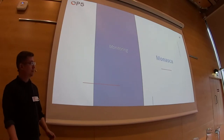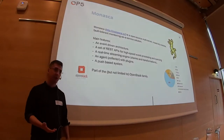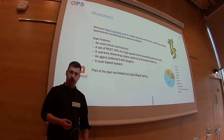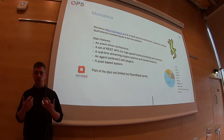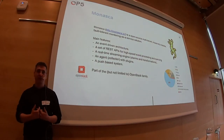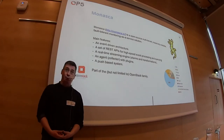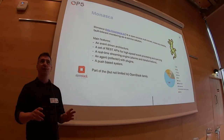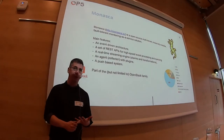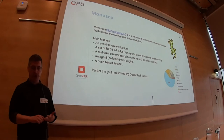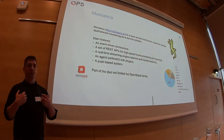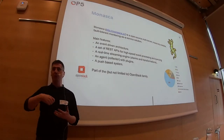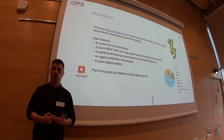This is where Monasca comes in. Monasca is originally built as part of one of the components in the OpenStack project. The definition is that it's an open source, multi-tenant, massively scalable, fault-tolerant monitoring-as-a-service solution. That means you have a set of APIs exposing different functionalities to the user, an event-driven architecture, and real-time computation capabilities — a real-time streaming engine on which you can define what you want to monitor and what you're interested in.